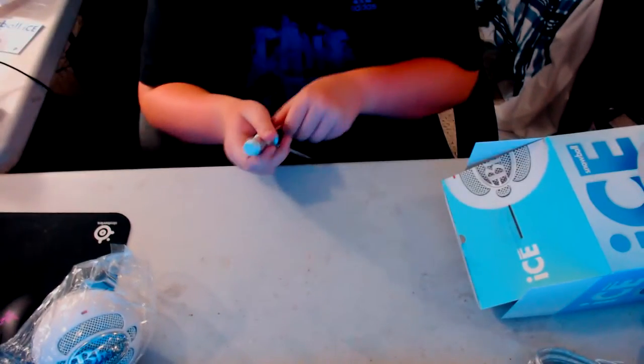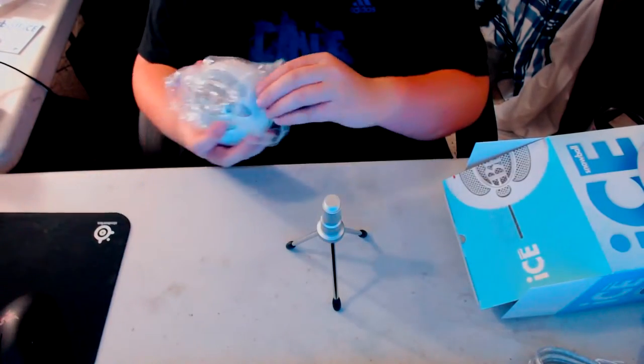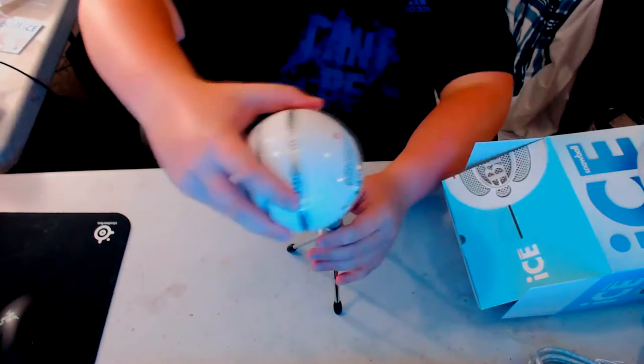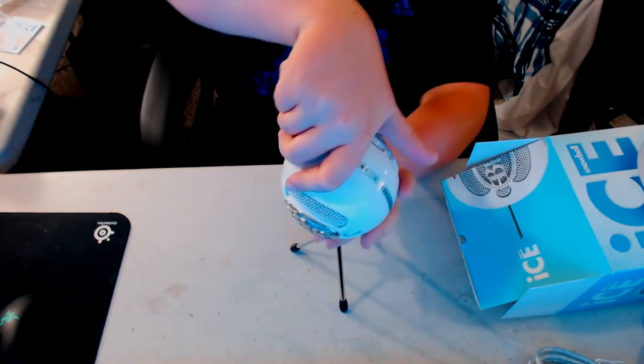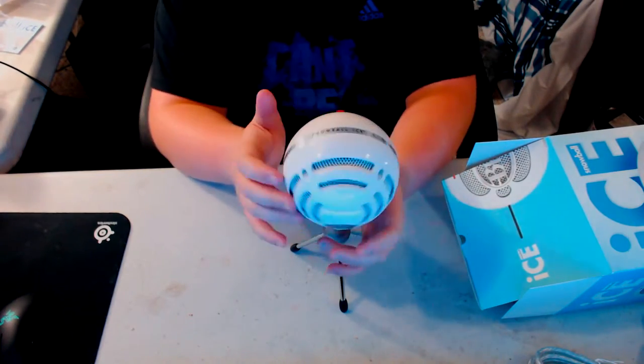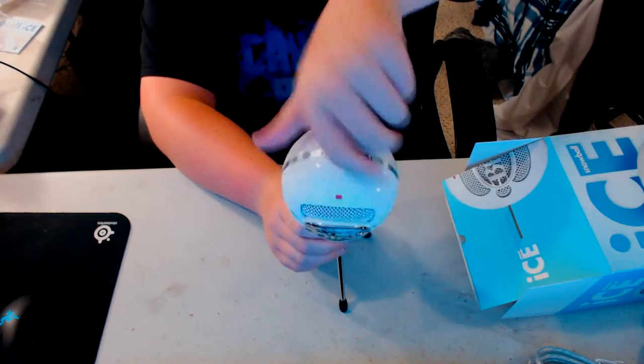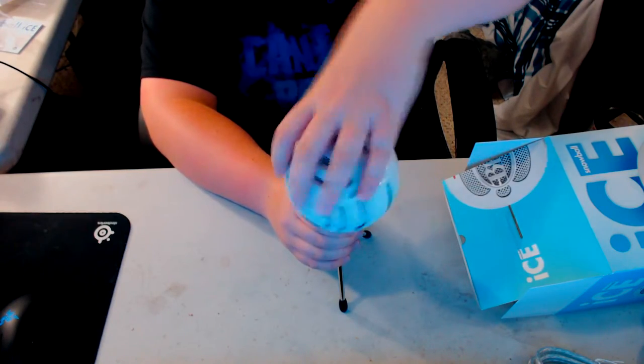So just a little stand. If you buy the more expensive Blue Snowball that's not the ice version, you get one that'll go up and down, just like how you'd put a camera on a tripod or something. Nothing super fancy.